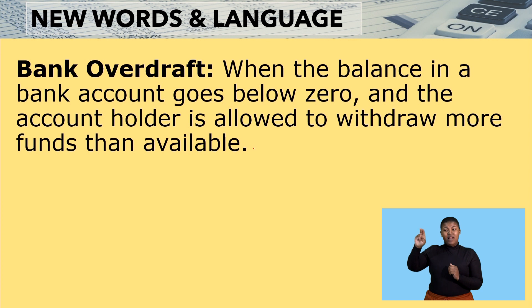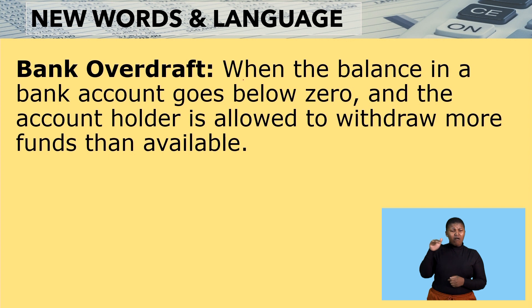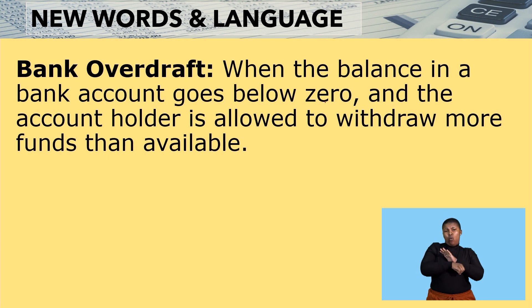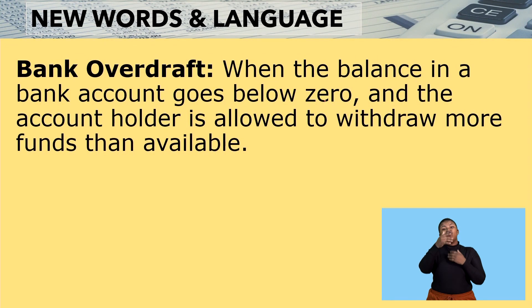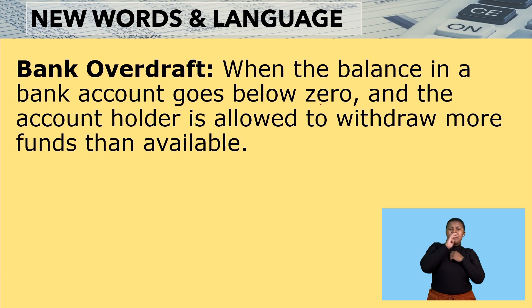Here are new words and language that you are going to learn in today's class. Bank overdraft — this is when the balance in a bank account goes below zero, and the account holder is allowed to withdraw more funds than available. So you have money in the bank account, but you spend that money until your account goes to zero. You are still able to withdraw more money beyond zero, meaning you are withdrawing more than what you have available. That is what we call a bank overdraft.